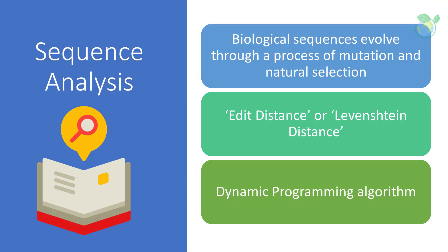Biological sequences evolve through a process of mutation and natural selection. One of the first attempts to align two sequences was carried out by Vladimir Levenshtein in 1965. The edit distance is defined as the number of single character edits necessary to change one sequence completely to the other. Dynamic programming algorithm optimally phrases the full problem as the optimal solution to smaller sub-problems — computing the edit distance needed. Various dynamic programming algorithms exist including the Wagner-Fischer algorithm, the Needleman-Wunsch, and the Smith-Waterman algorithm.